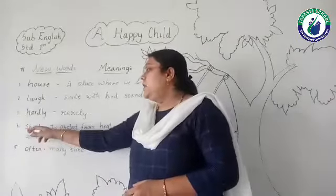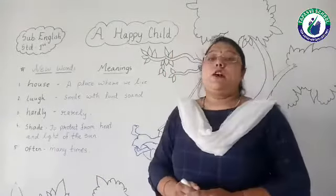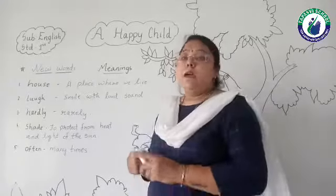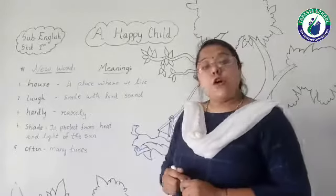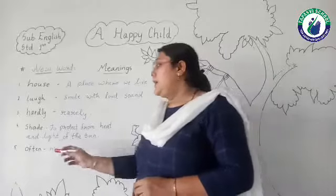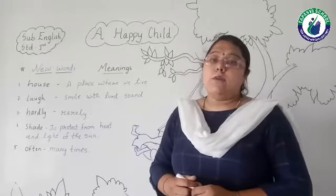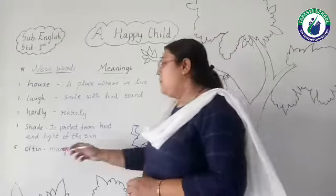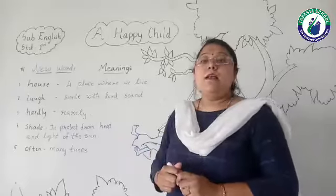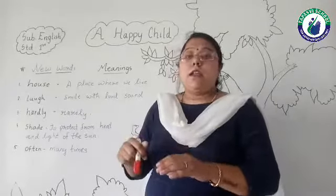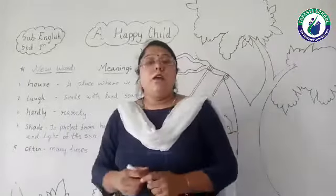Number four: shade — S-H-A-D-E. Shade means to protect from the heat and light of the sun — chhaon. Next: often — O-F-T-E-N. Often means many times — bohat baar. That girl was going under the tree to sit many times.